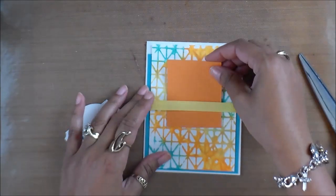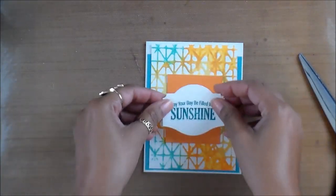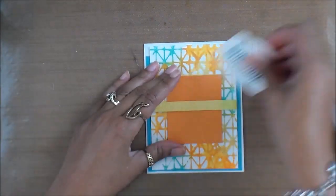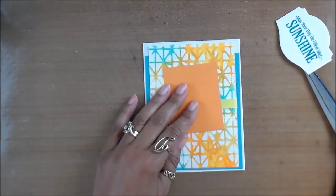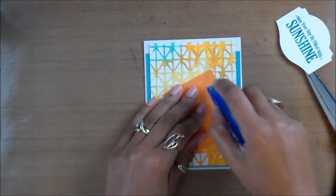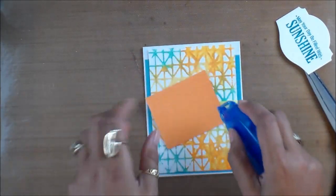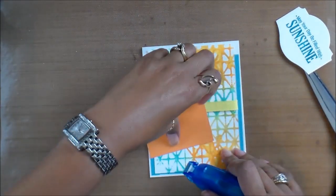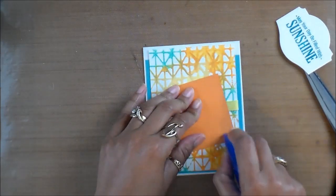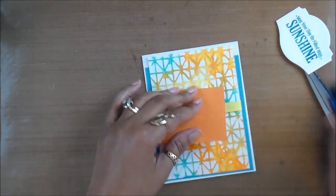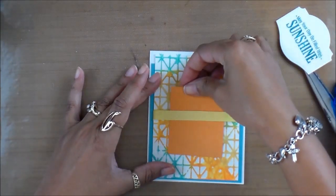I think I'm going to slip that orange panel behind it and then put my sentiment on top. As you can see, this is a really quick and easy way to make sort of your own custom design paper. Wasn't hard to do, only took us a couple of minutes. And I'm telling you, every time you do it you're going to get a different look.